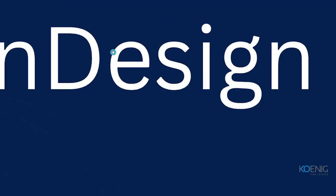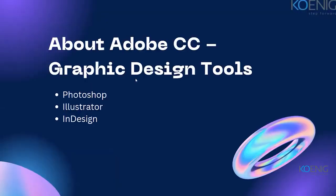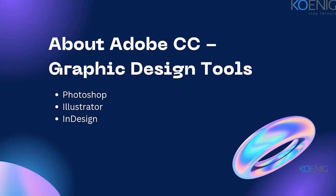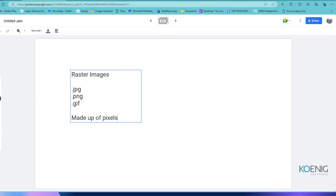If I talk about text, that is vector, so the sharpness of the text or vector graphics is going to be more. Even if you zoom in, it's not going to blur out. That's the main difference between raster and vector — raster images are made up of pixels and they blur out when zoomed.